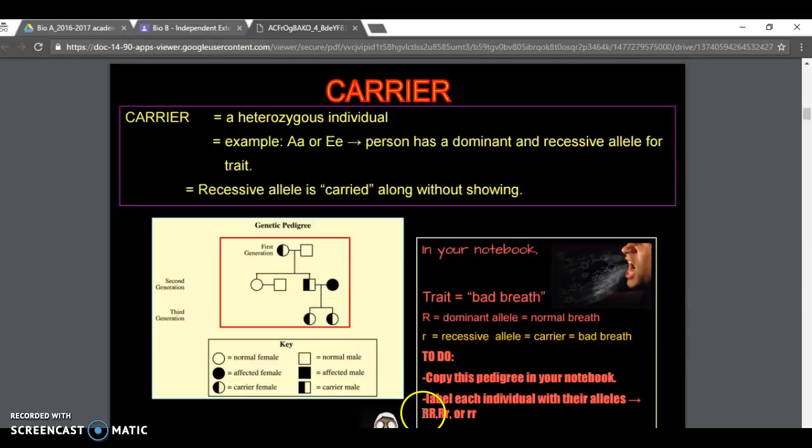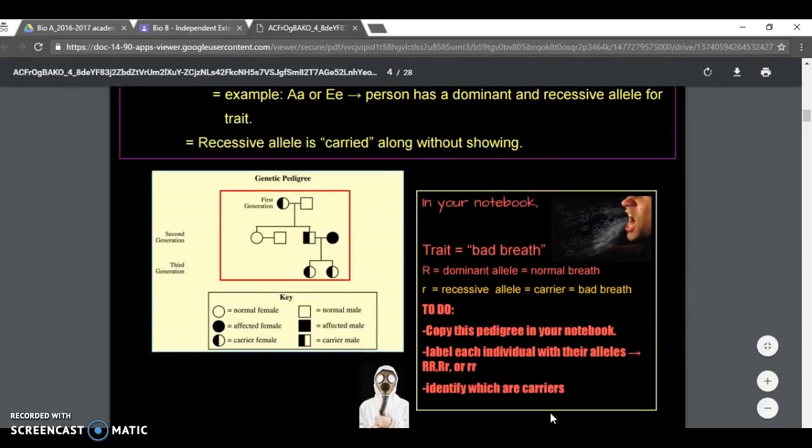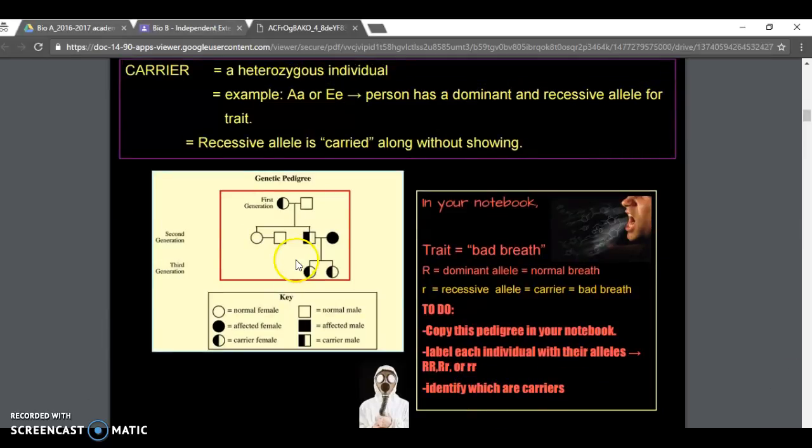You're either going to give them homozygous dominant, heterozygous or carrier just like the slide is about, or homozygous recessive. And once you identify which are carriers, maybe just circle them. But everybody here should get two alleles each. What would those be?